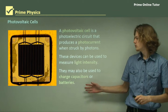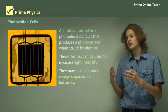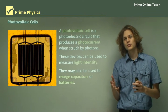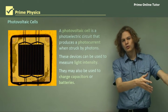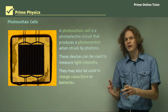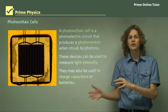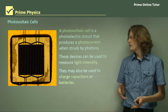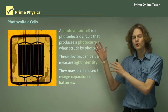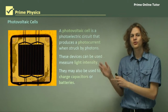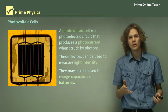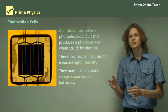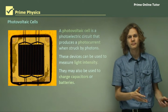They can also be used to charge capacitors or batteries. A capacitor is a device that slowly absorbs energy and then releases it all at once. So if we have a photovoltaic cell producing even a very small current, it can charge a capacitor, which can then later be used to release a lot of energy all at once.